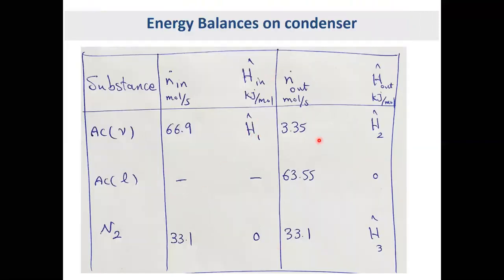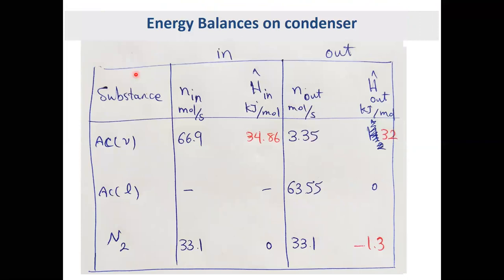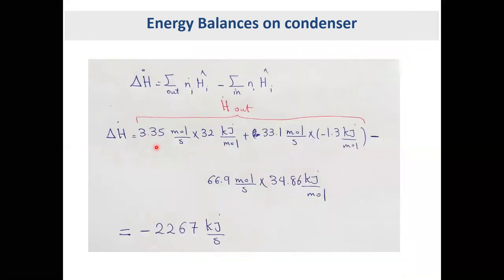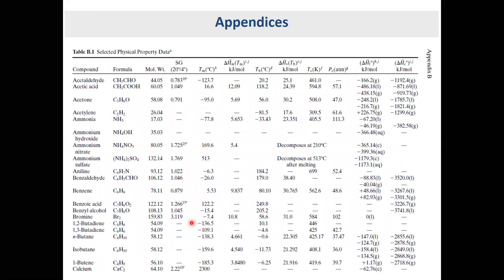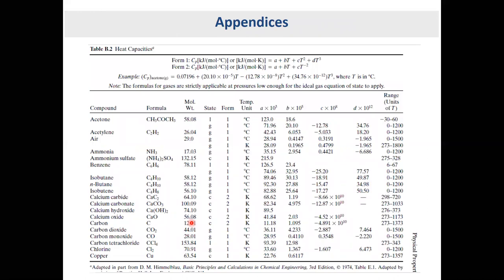With H1, H2, and H3 calculated, we can now compute the total enthalpy change. Multiply each specific enthalpy by its corresponding mole rate, sum all outlet stream enthalpies, and subtract the inlet stream enthalpy. This gives delta H, which equals the heat transfer rate Q for the condenser. So changes in enthalpy equal the heat rate of the system.